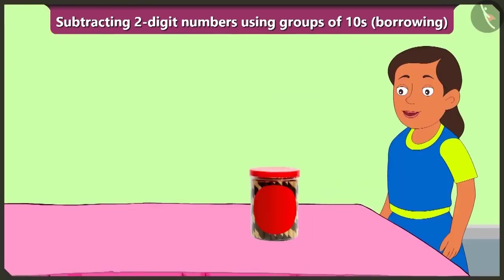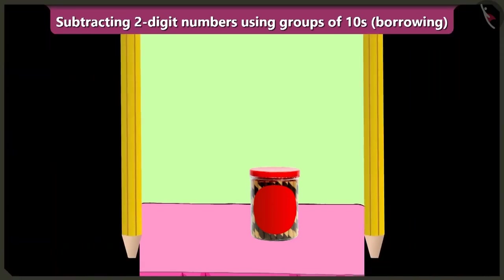Look, Bubbly's mother also bought some chocolate sticks for Bunty and Bubbly while returning home from the market. Oh look, it seems that Bubbly is very happy on seeing the chocolate sticks.